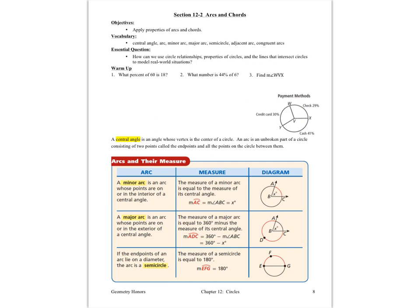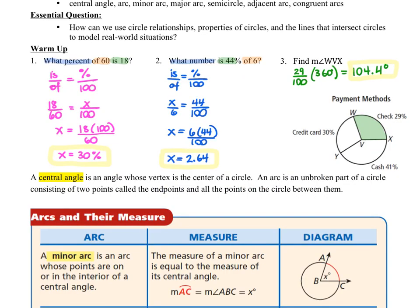You've got three warm-up questions to work on, so I'm going to ask you to pause the video and turn it back on when you're ready to check your answers. The formula 'is over of equals percent over 100' is a throwback to our pre-algebra days, and hopefully you only found number three a tiny bit challenging, where we want to find the angle measurement in degrees for angle WVX. It can be found by knowing that we have 29% of the 360 degrees included in that angle.